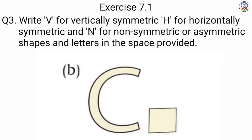We have alphabet C. Alphabet C — it is horizontally line of symmetry, so in the box given, we write H.